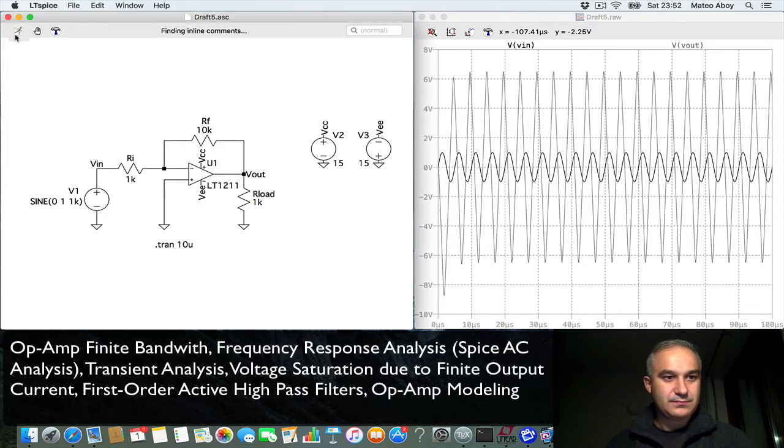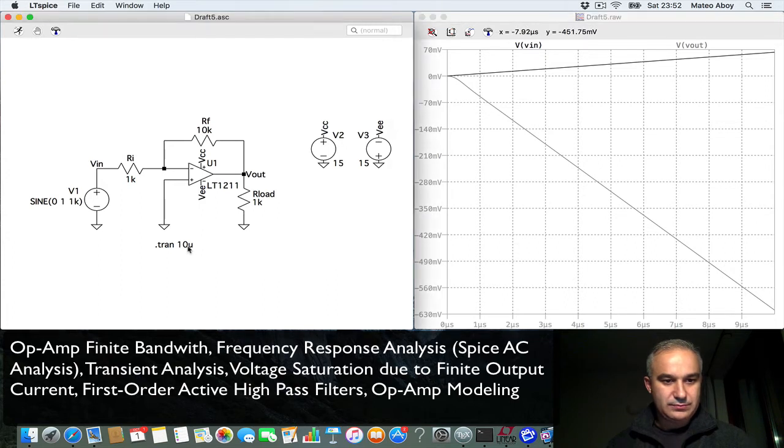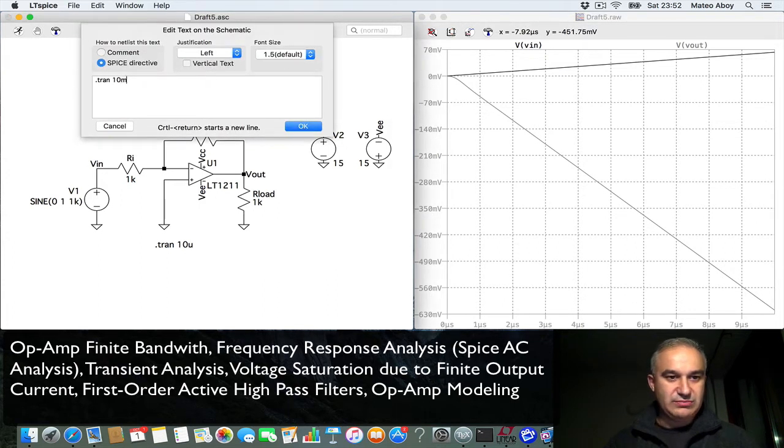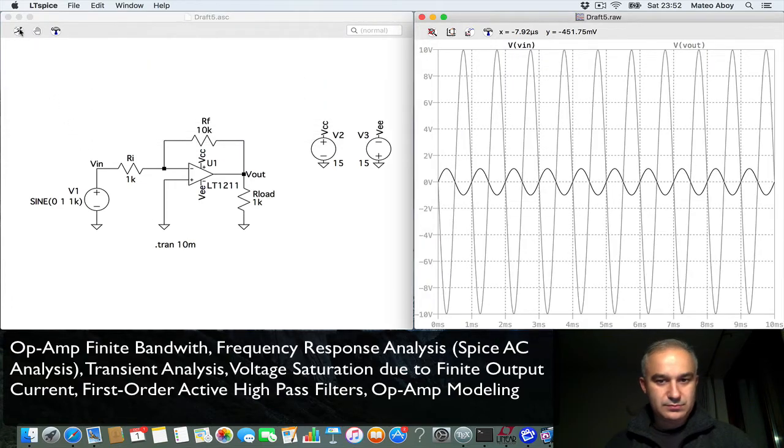So let's start by doing a transient analysis, oh sorry, let's do this 10 milliseconds. So what we have here is a sine wave with an amplitude of 1 at the input. You see here this is an inverting amplifier, so the output is an inverted version of the input,